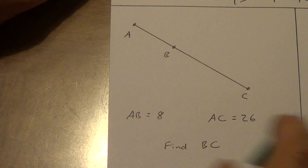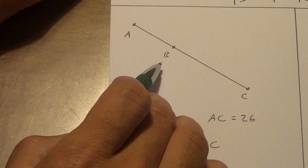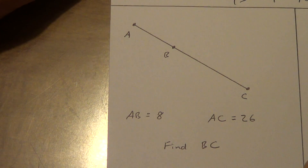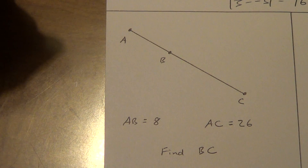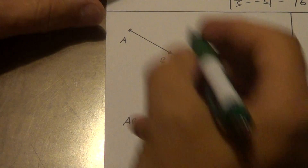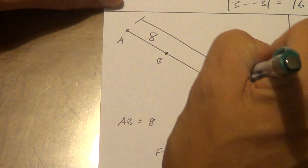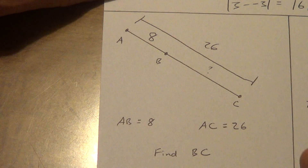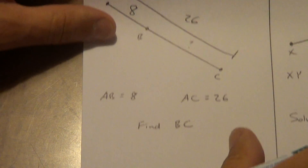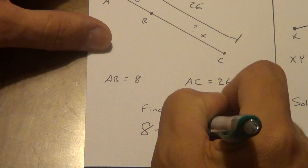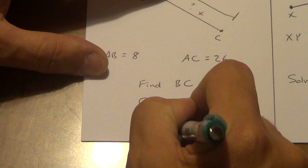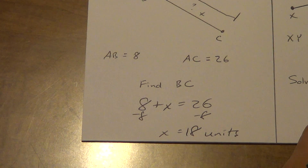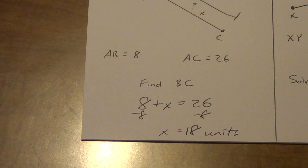Next example: I have a straight segment with B between A and C. AB is 8 and AC is 26 — find BC. Segment Addition says 8 plus BC equals 26. I'll call BC as X and write it as an algebra problem: 8 plus X equals 26. Subtract 8 from both sides: X equals 18. Since no distance label was given, BC equals 18 units. Get in the habit of labeling things.